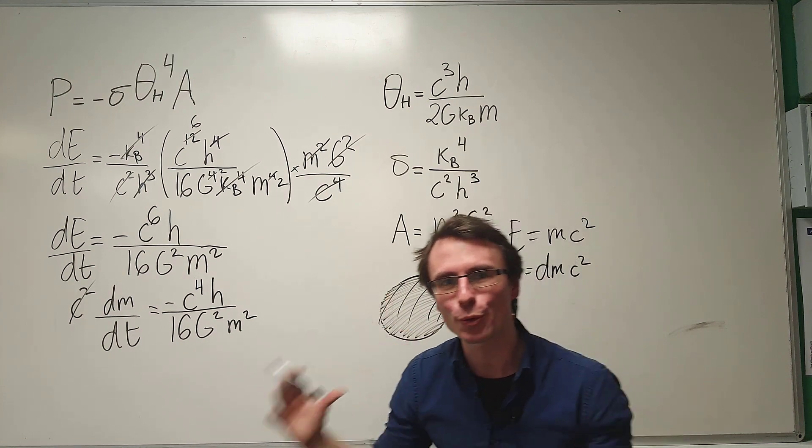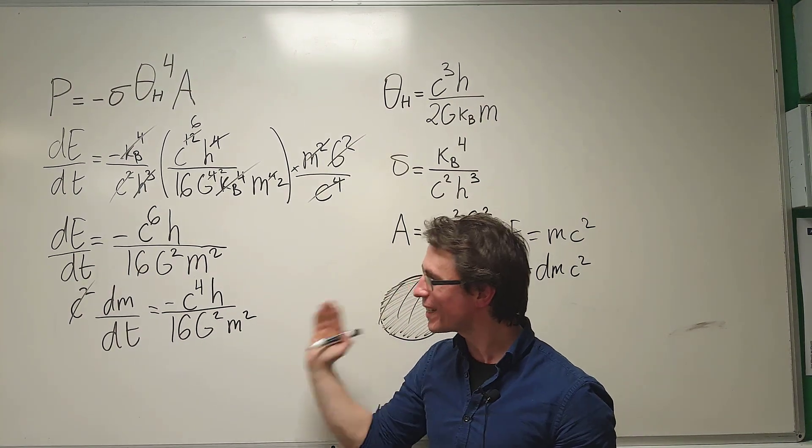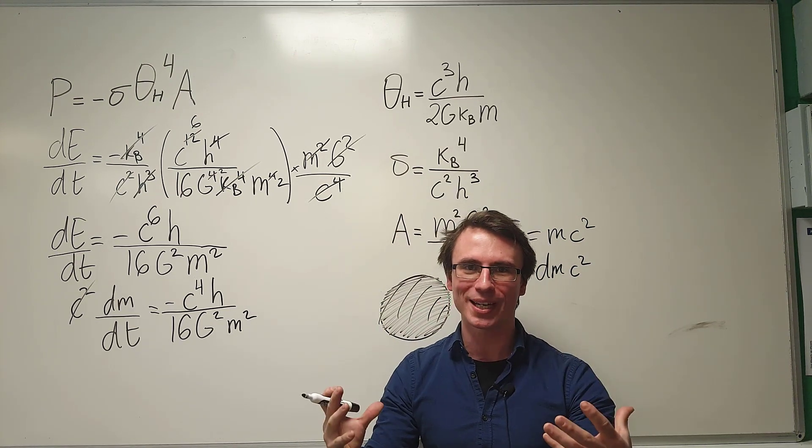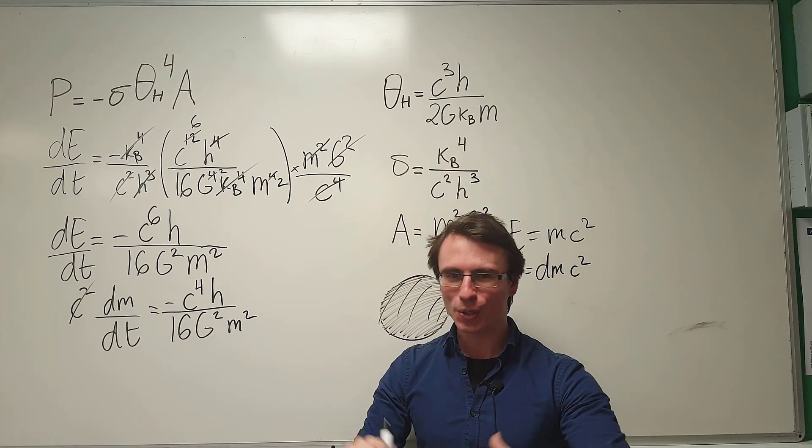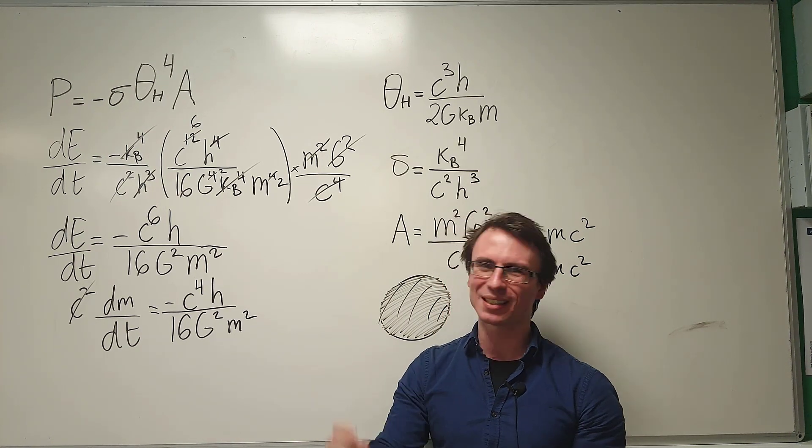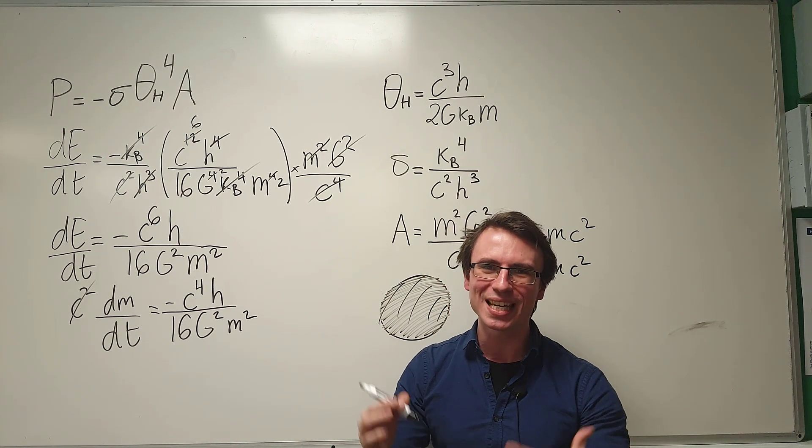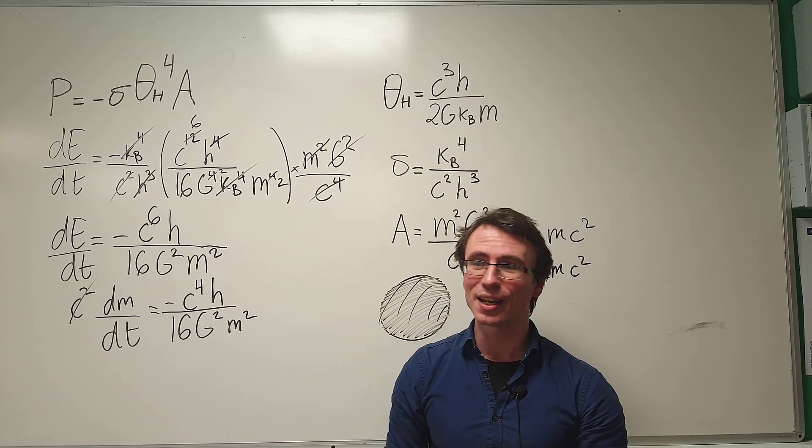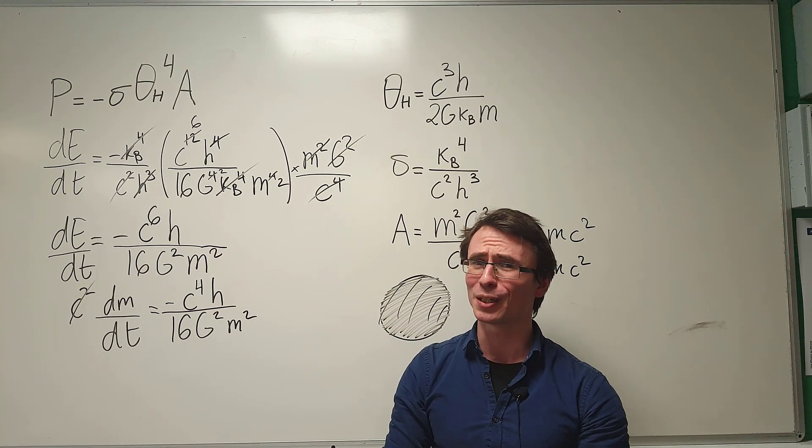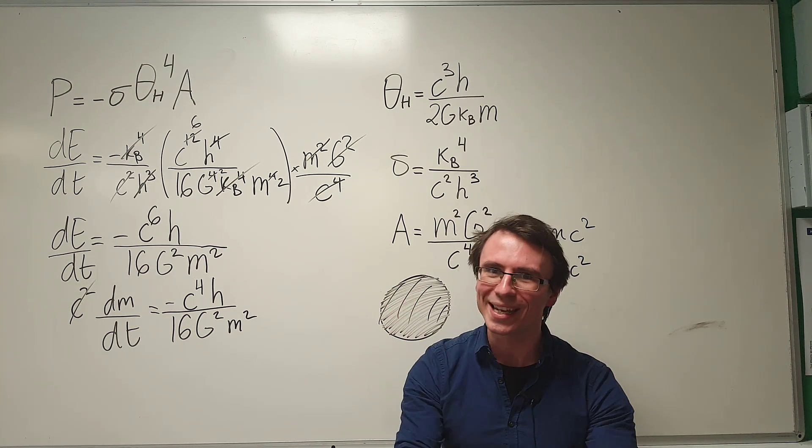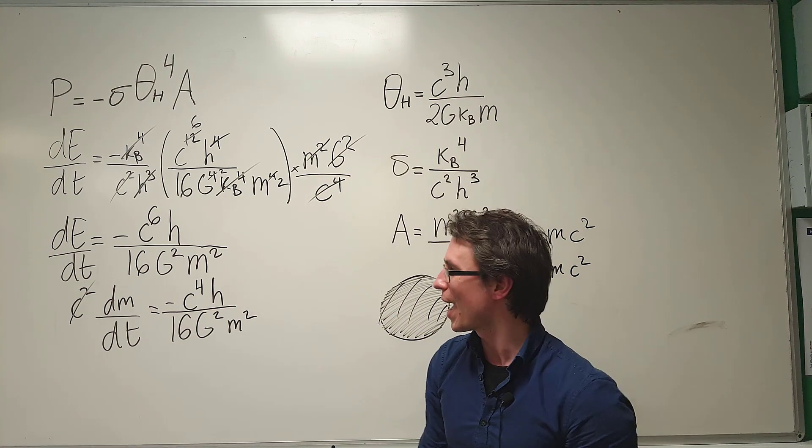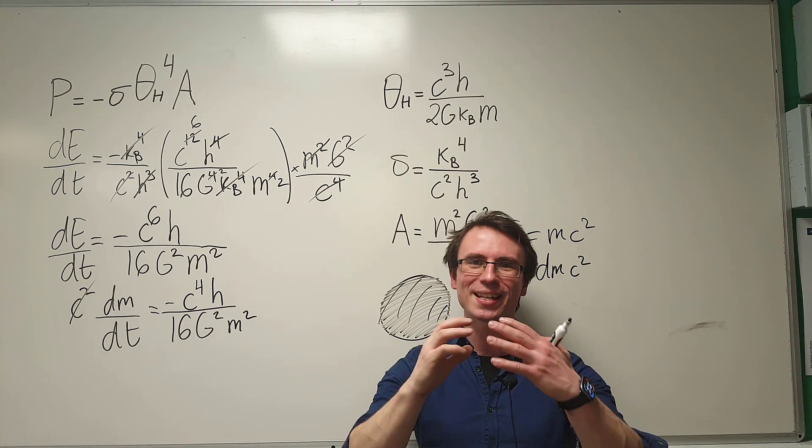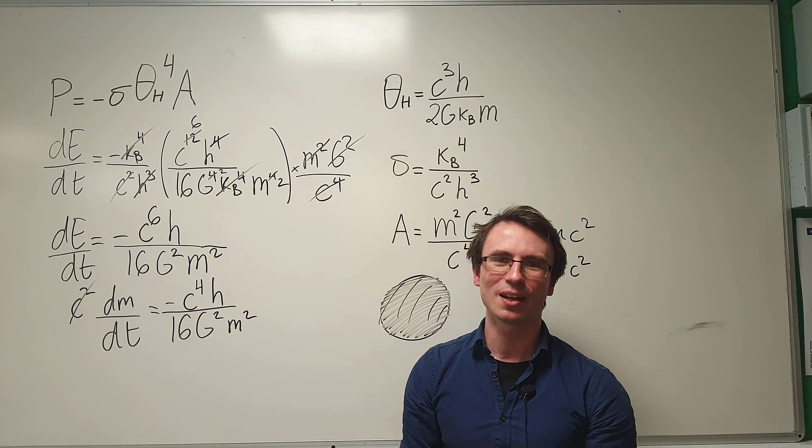And there we have it. We have an expression for the rate of change of mass of a black hole via Hawking radiation. Think about this. This differential equation is telling us how much mass the black hole is actually losing per second. Now, if you guys are interested in solving this differential equation, and realistically you should be because it's just so interesting, check out JustCalculus's channel, and over there I'm going to be solving this differential equation, and we're going to find out the evaporation time of a black hole.